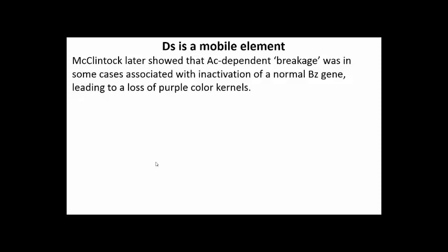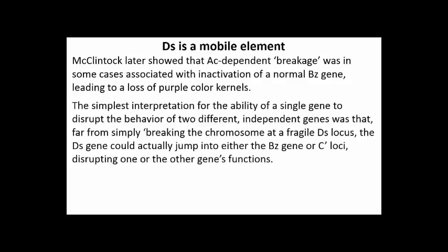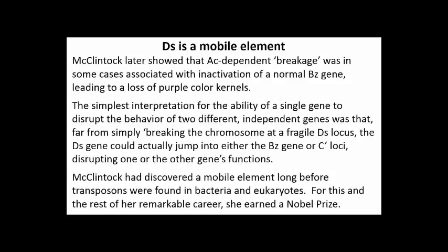At this point she realized that chromosome 9 containing a ds element was not simply breaking. The only way to explain what was going on was that the ds element must be dissociating from its original locus, but moving into or next to either the c' or the dominant bz genes in order to disrupt them. So McClintock had discovered a mobile element long before transposons were found later in bacteria and eukaryotes, and for this and the rest of her remarkable career, she earned a Nobel Prize.